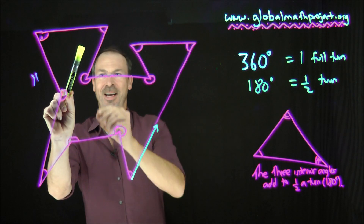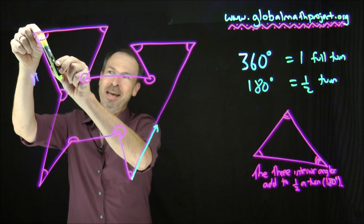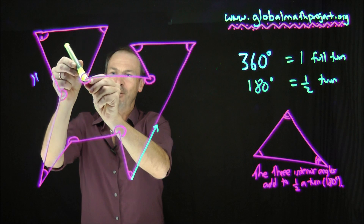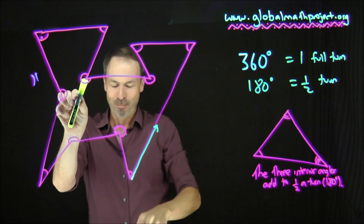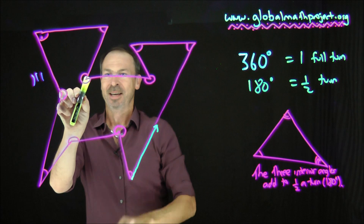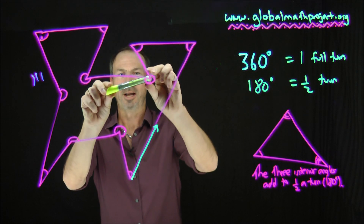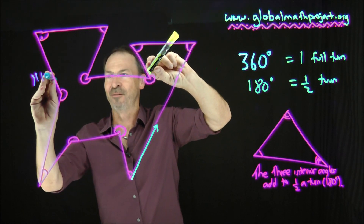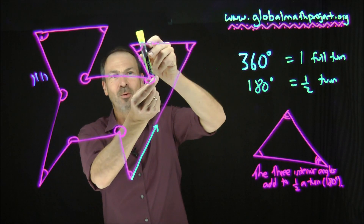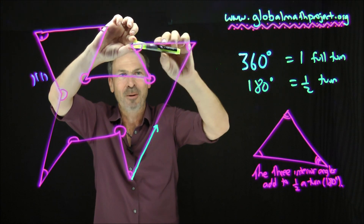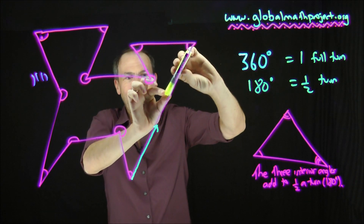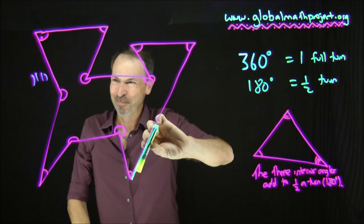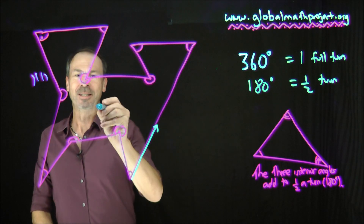Continuing through the remaining angles of the 11-sided shape: the fourth full turn arrives. Then applying the final angles — zoom, zoom — and back to the beginning. It looks like these 11 angles add up to four and a half full turns.